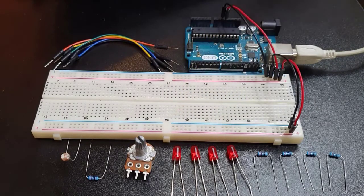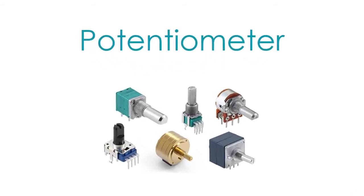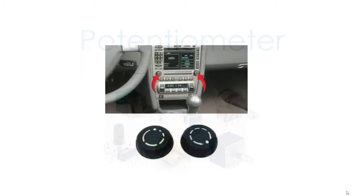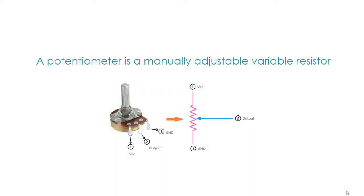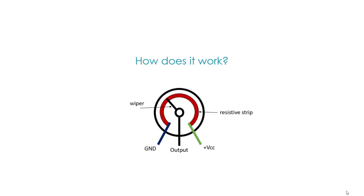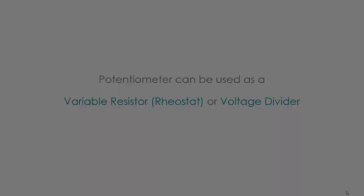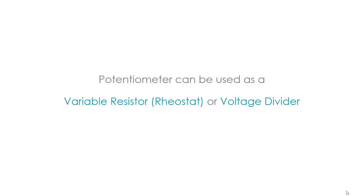Let us start with the potentiometer. Potentiometers may come in a wide variety of shapes and sizes. They are used in many applications in your daily life. A very common example is the volume control of your car radio. A potentiometer is basically a manually adjustable variable resistor with three terminals. Both ends of the terminals are connected to a resistive element, and the middle terminal is connected to an adjustable wiper. A potentiometer can work as either a rheostat, just a variable resistor, or as a voltage divider. If you want to refresh your memory on voltage divider circuit, the series and parallel video link is provided in the description below.